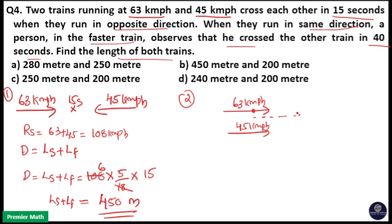If the person is sitting in the faster train and that train moves forward, he crossed the entire slower train in 40 seconds. That means he covered the distance equal to the length of the slower train. So in the second case, distance covered equals the length of the slower train.